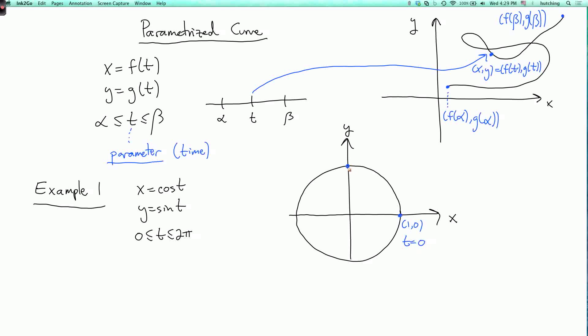As t goes up to pi over 2, we go to the point 0, 1. As t goes to pi, we reach the point minus 1, 0. When t equals 3 pi over 2, we're at the point 0, minus 1. And then at t equals 2 pi, we're back where we started. So we go around the circle once. And it's customary to draw an arrow on the curve which indicates the direction in which t is increasing. In our general picture over here, it looks like this. There.